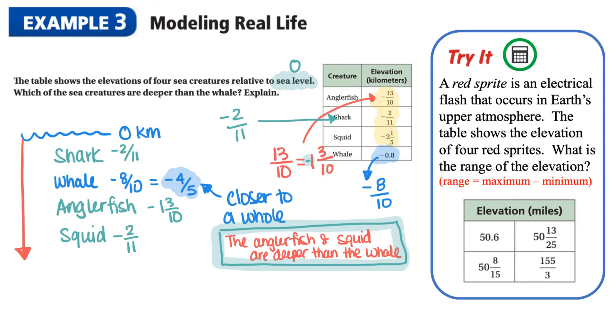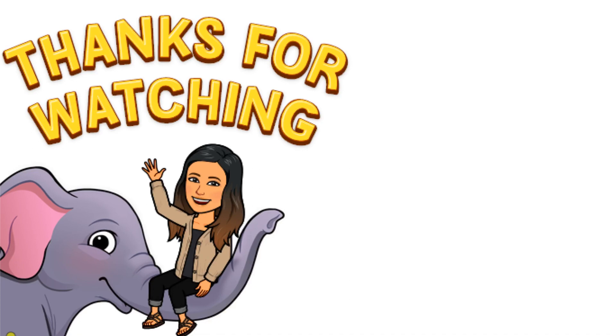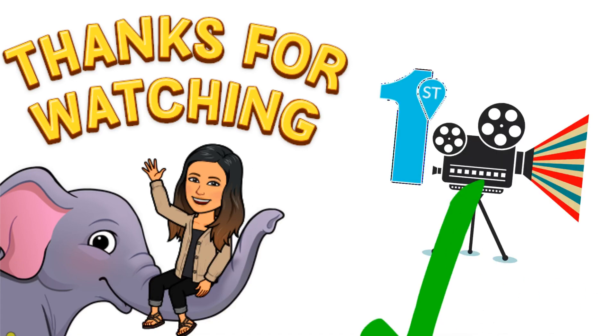Alright, so here is your last try question for this video. For this try question, you may use a calculator. And you're going to be at the end of the question. It says, what is the range of elevation? And I put in that the range, if we forgot, is equal to the maximum, or the largest number, subtracting the minimum, which is the smallest number. So good luck with that. Alright, grade 7. Thanks for watching. Our first video of the year is now done.